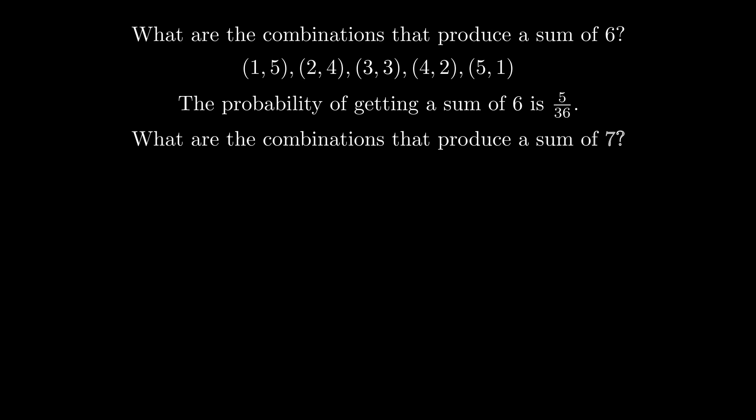Similarly, the probability of getting a sum of 7 is 6 out of 36 or 1 over 6.